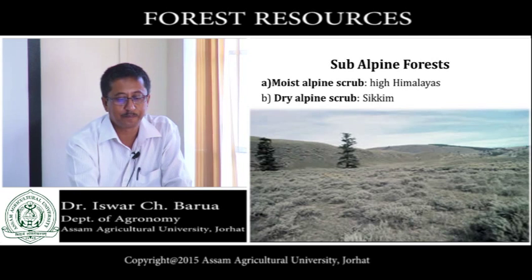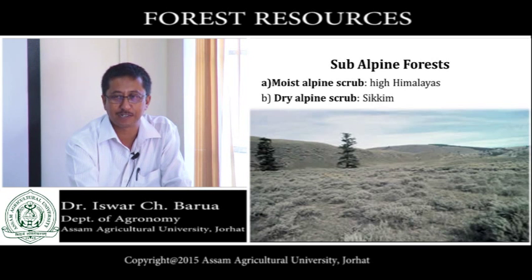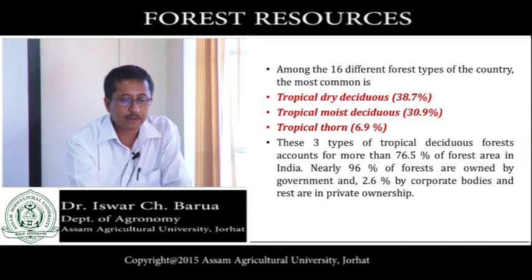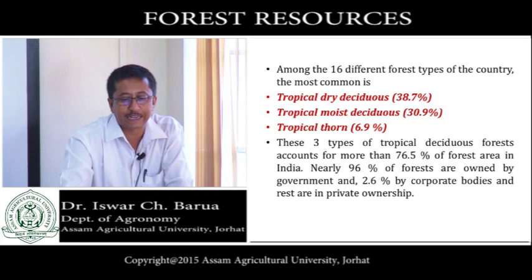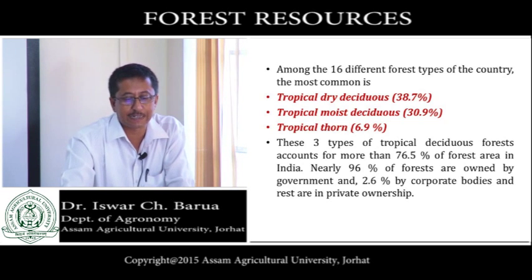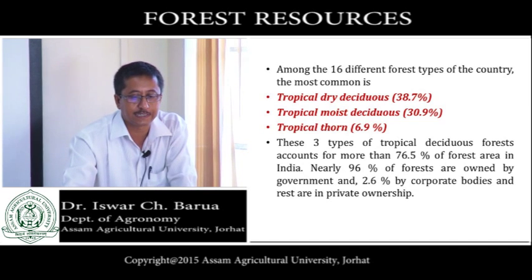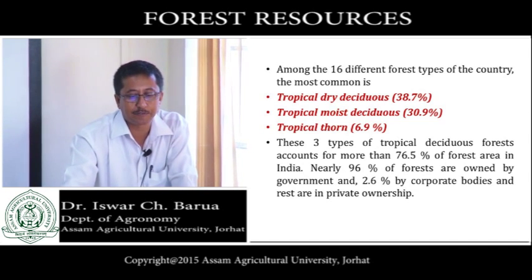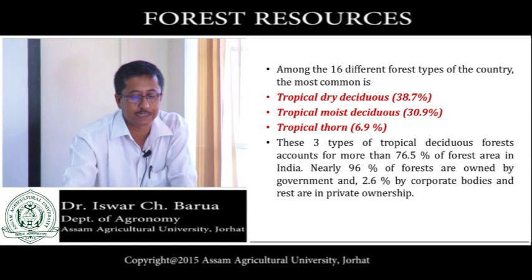Scrub means bushy — mostly only two trees are seen and the rest are bushes. These plants are usually covered by ice and fog. Among the 16 different forest types of the country, the most common is tropical dry deciduous at 38.7 percent, tropical moist deciduous at 30.9 percent, and tropical thorn forest at 6.9 percent. These three types together account for more than 76.5 percent of the forest area in India.